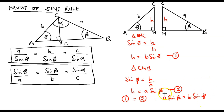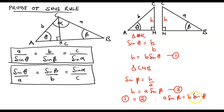Moving forward, in the equation we generated, the side A has its corresponding interior angle on the right-hand side, and likewise the side B has its corresponding interior angle on the left-hand side. So we divide both sides by sine of theta and sine of beta.